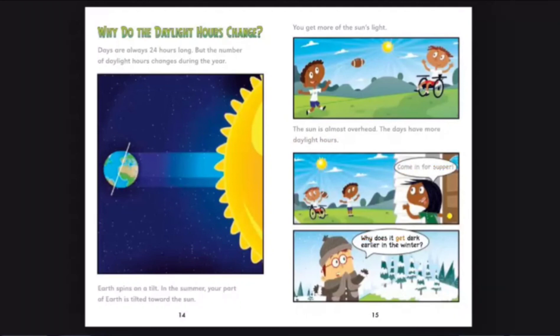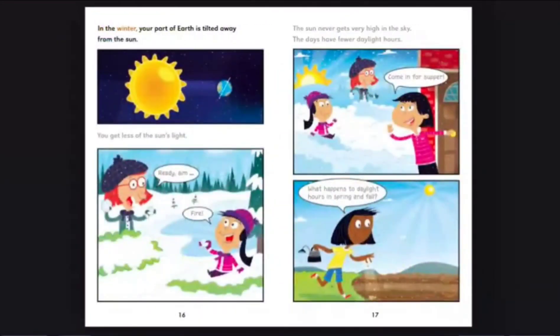Come in for supper. Why does it get dark earlier in the winter? In the winter, your part of Earth is tilted away from the sun. You get less of the sun's light. Ready, aim, fire! The sun never gets very high in the sky. The days have fewer daylight hours. Come in for supper.